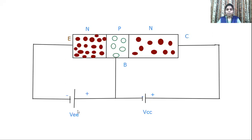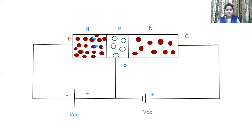Now, looking at VEE - the negative terminal is given to the emitter, which is N-type material. As negative is given to N-type, a repulsion force is created on the electrons present here. When these electrons experience repulsion, they tend to move towards the base. Here you can find the emitter-base junction.